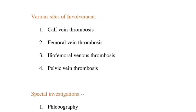Various sites of involvement. First, calf vein thrombosis — the most frequent site of thrombosis is probably the veins of the calf. Second, femoral vein thrombosis — quite often, thrombosis of the calf vein is associated with thrombosis of the femoral veins. Third, iliofemoral venous thrombosis — it may also be associated with calf vein thrombosis. The reason may be the apparently longer course of the left vein, its constriction by the right iliac artery, and the occasional presence of a congenital web at its junction with the inferior vena cava.